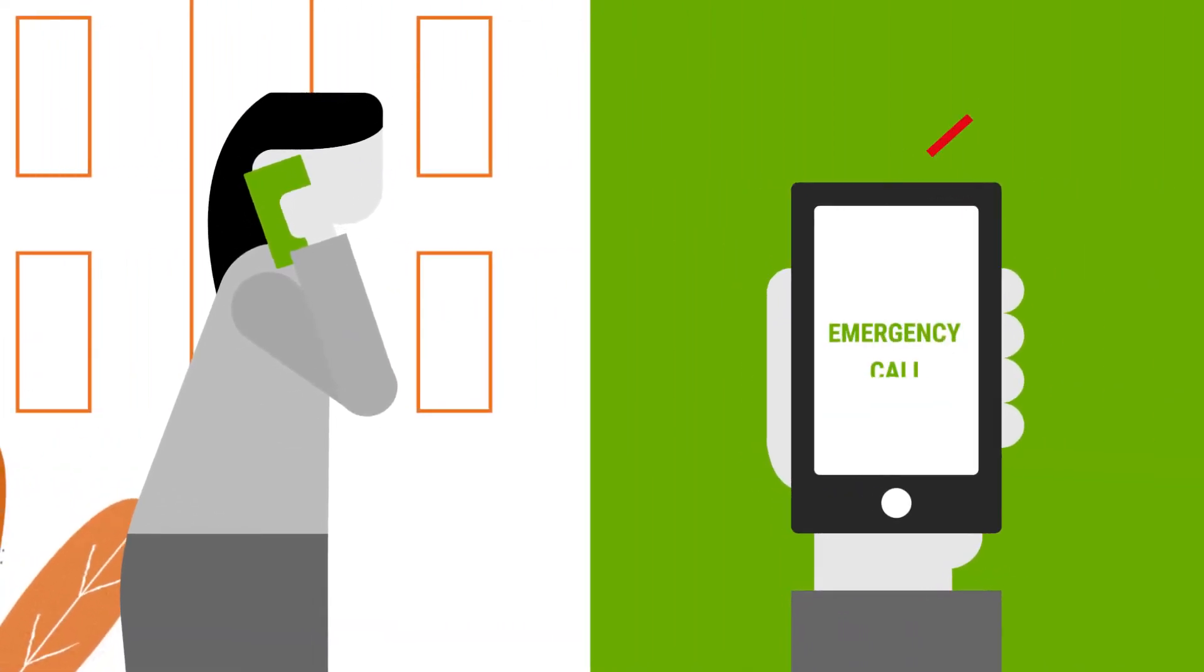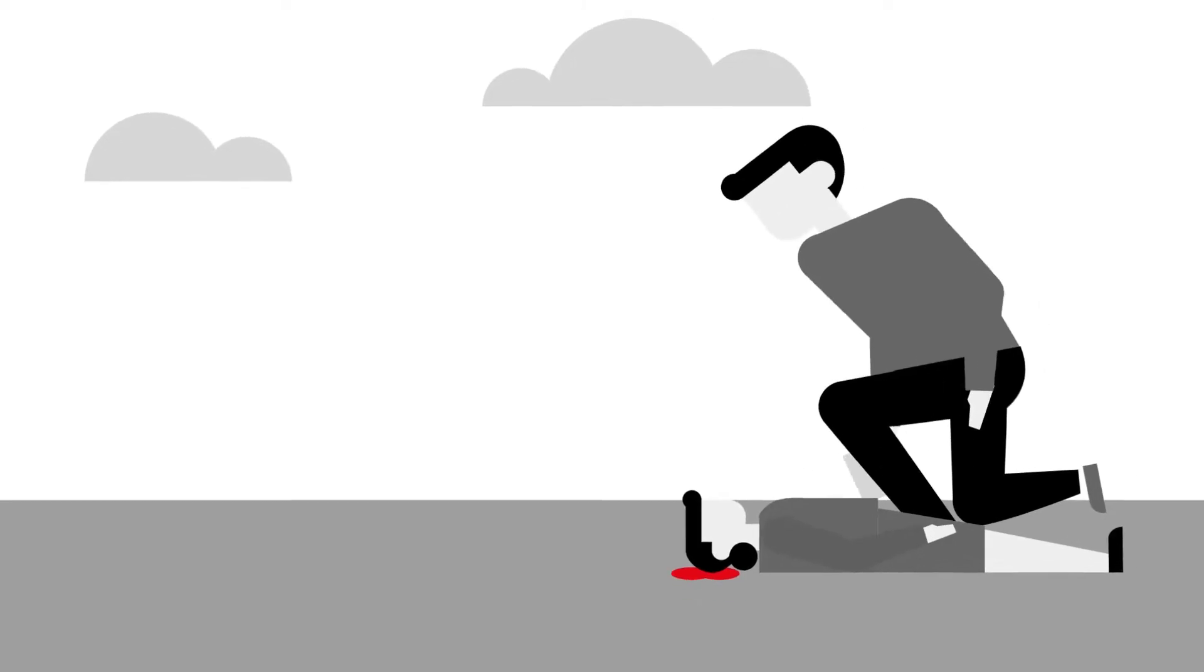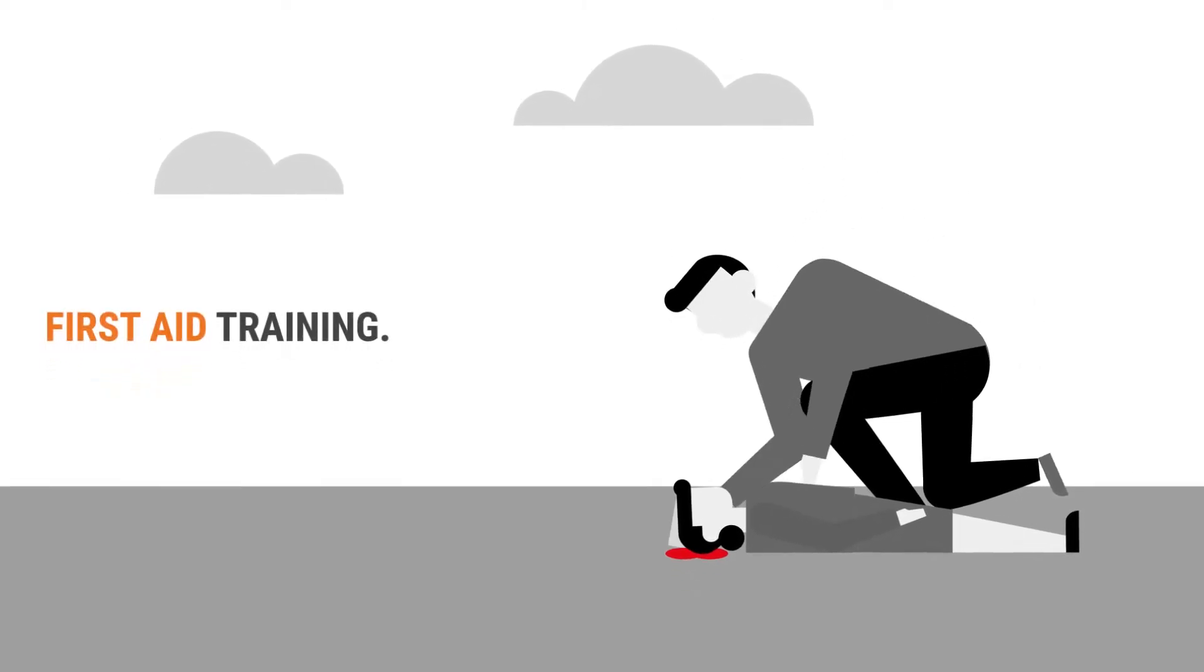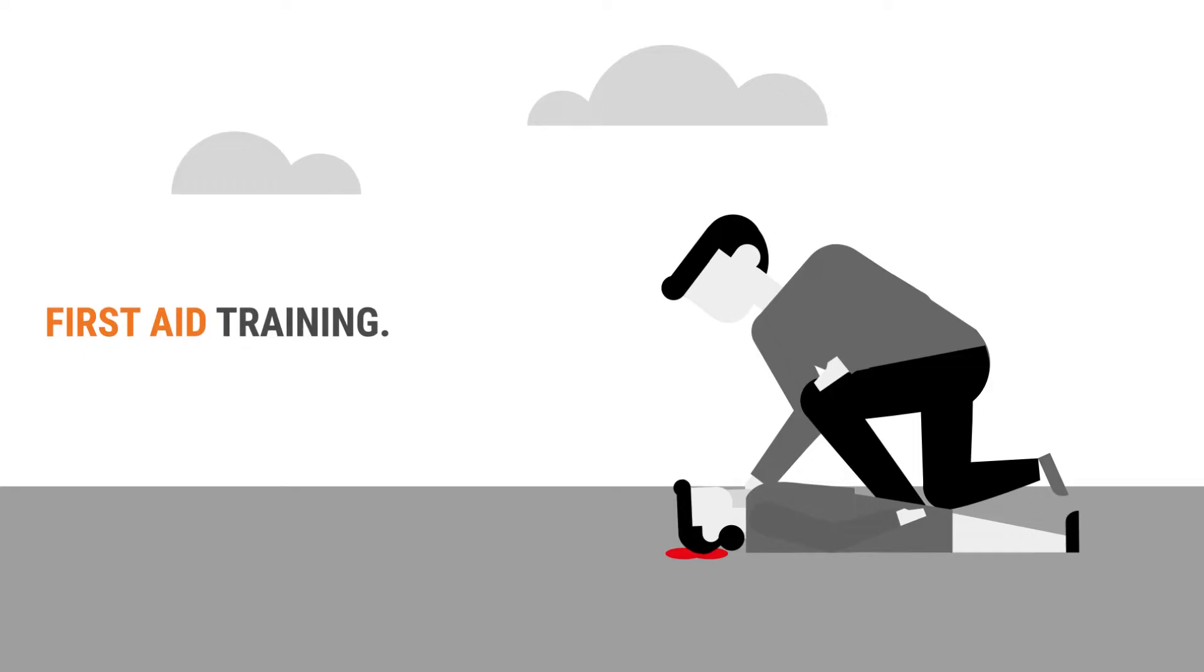Bystanders need: one, to be able to call for help, ideally through a universal access number; two, to know the basics of first aid to safely assist the ill and injured; and three, to be protected by a good Samaritan law.